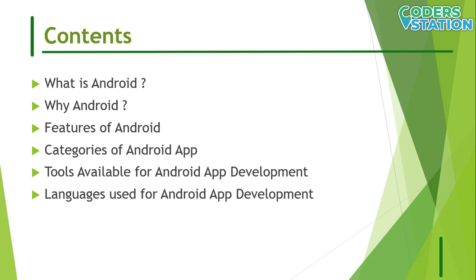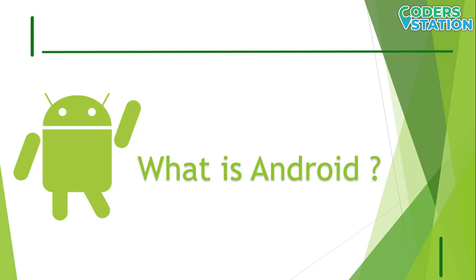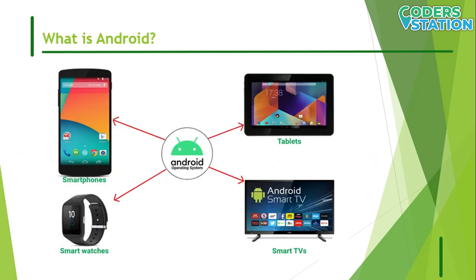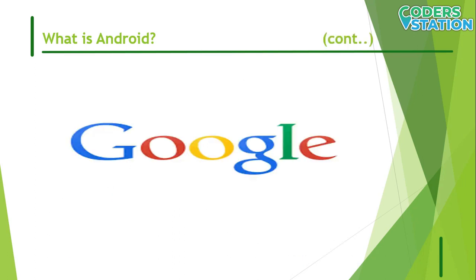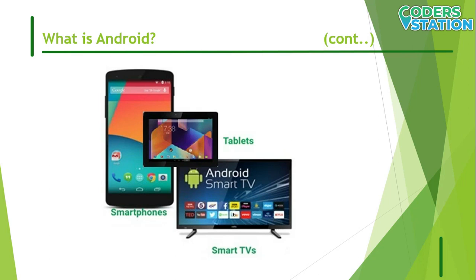So what is Android? Android is an open source and Linux-based operating system for tablets, mobile phones, watches, in-car entertainment systems, and more. Google acquired Android in 2003 and it has since become the most popular operating system for mobile devices in the world. Android offers a unified approach to application development, meaning developers need only develop for Android and their applications should be able to run on different devices powered by Android.